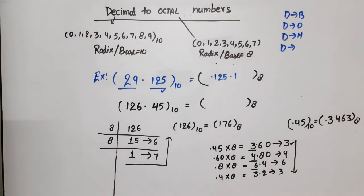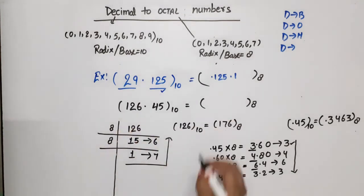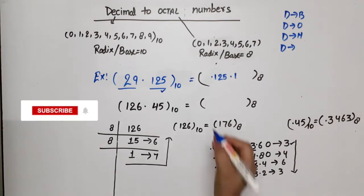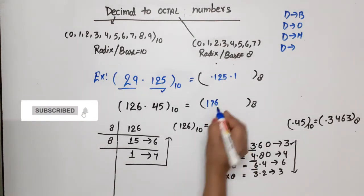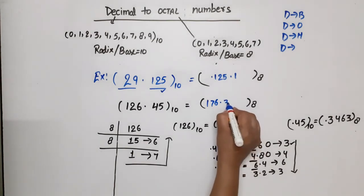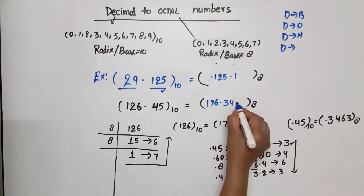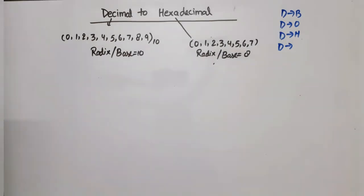Now we combine the integer and fraction parts. The integer part was 176 and the fraction part was 0.3463. So the final answer is 176.3463 in base 8.